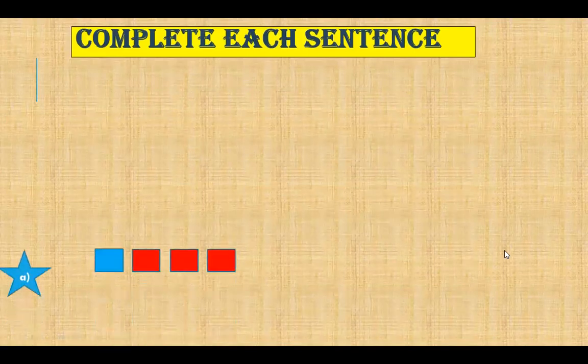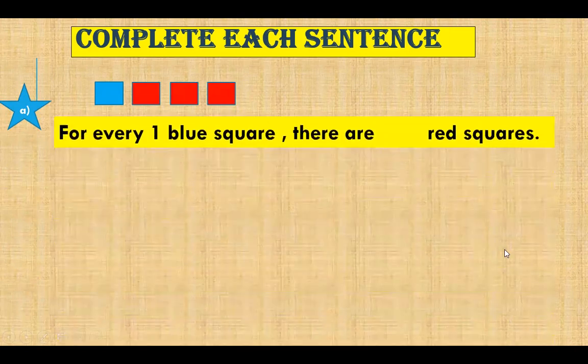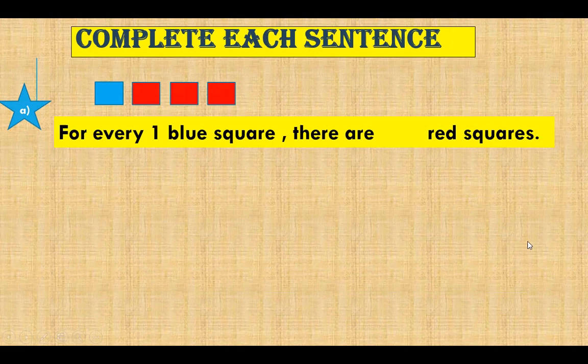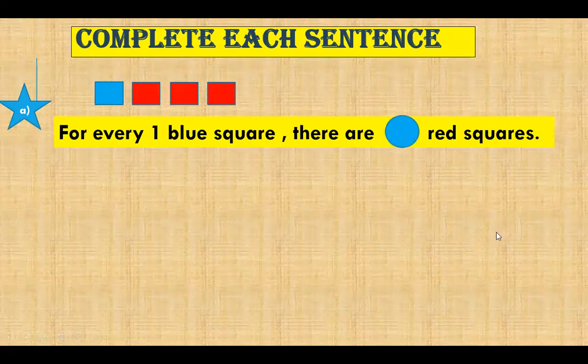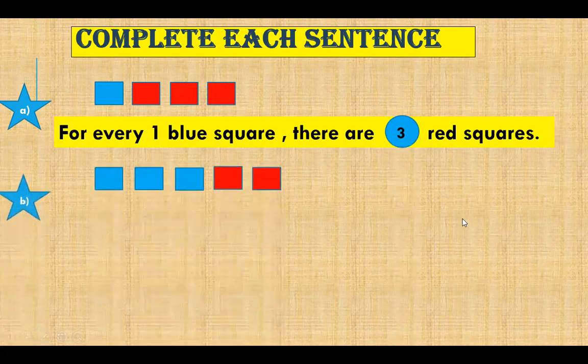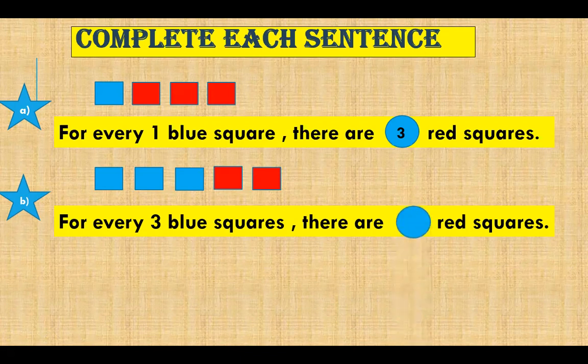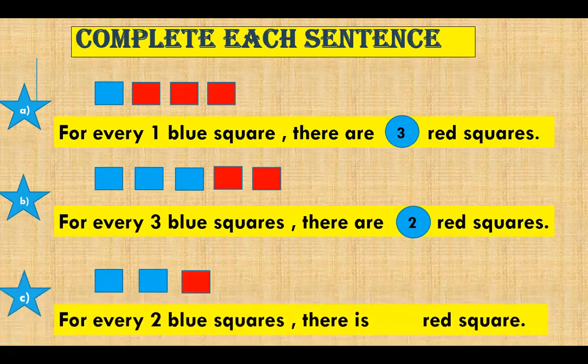Complete each sentence. For every one blue square there are how many red squares? Correct. There are 3 red squares. Yes, there are 2 red squares. Yes, it's 1.